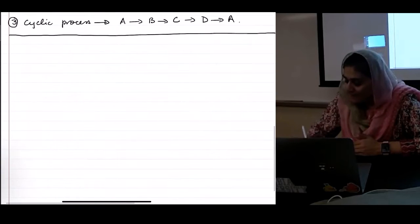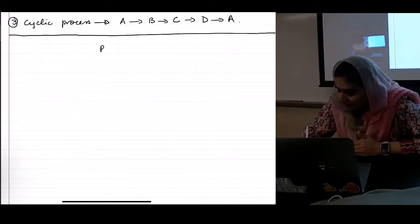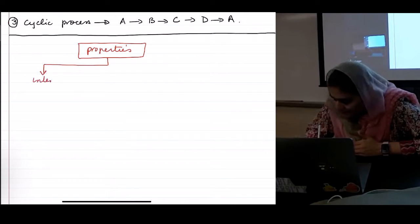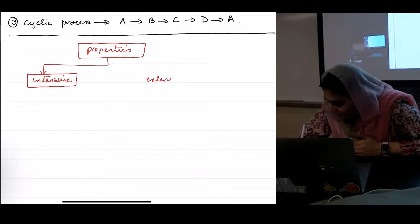There are two main kinds of properties that we talk about. One are called intensive and the other ones are called extensive.